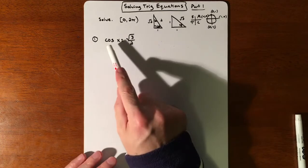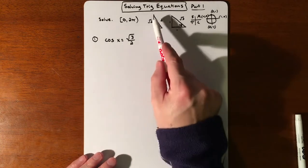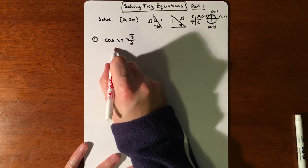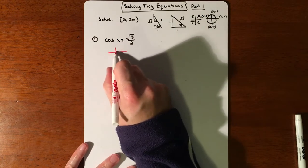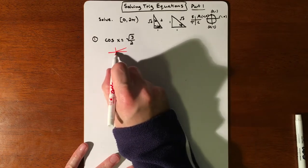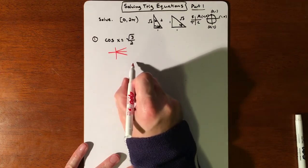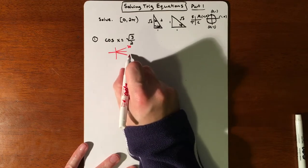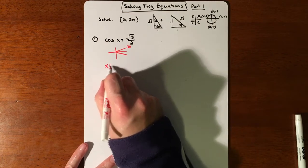To start, we're looking at cosine of what angle is going to get us root 3 over 2. It's a 30 degree, so our reference angle is 30 degrees. However, we're talking about 30 degrees in the first quadrant and 30 degrees in the fourth quadrant. So 30 and 330.